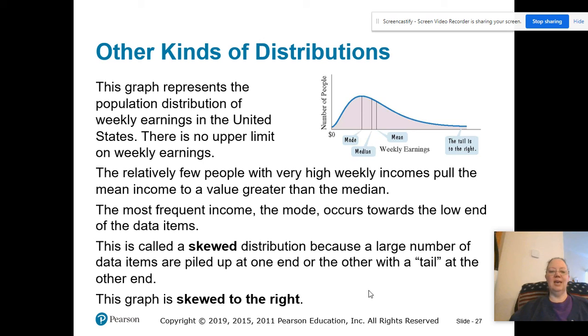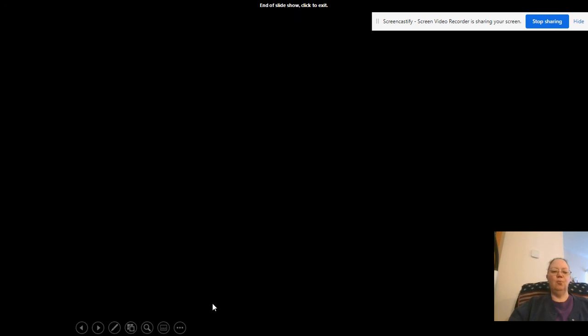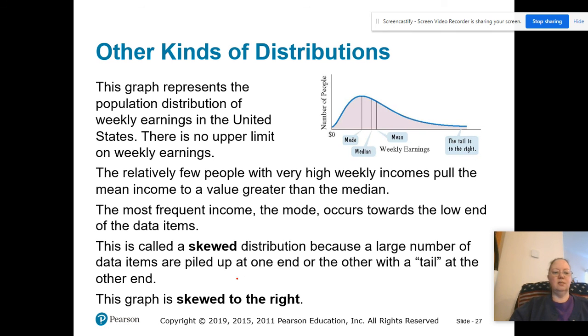The side of the tail is which direction we say it's skewed. So here we have this little tail over here. We say it is skewed to the right. To be skewed to the left, we would have a little bitty tail here and then go up like that. So the tail end is the direction in which we say it's skewed. For some reason, I could never remember that, but hopefully you guys will remember that better than I will.